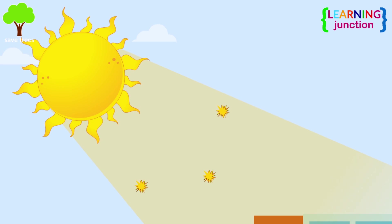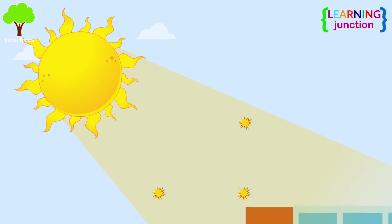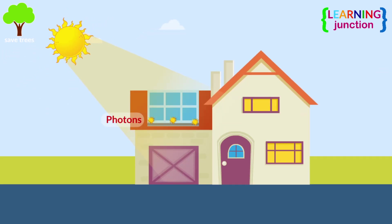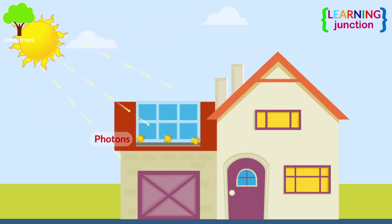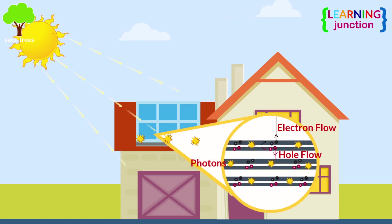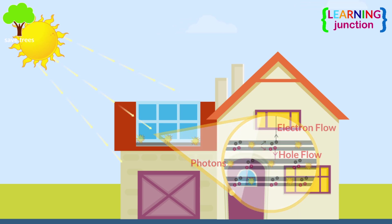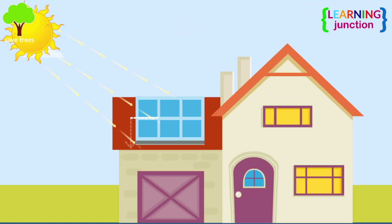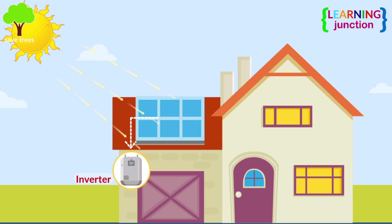The sunlight is made up of tiny packets of light called photons. When these photons hit a solar module, electrons inside of the solar module move and an electrical current is produced. This current then travels from the solar array to an inverter.